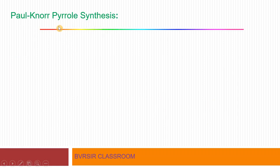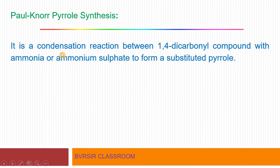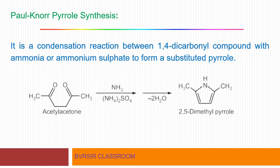Paal-Knorr synthesis is a named reaction. It is a condensation reaction between a 1,4-dicarbonyl compound with ammonia or ammonium sulfate to form substituted pyrrole. It is a very easy method for the synthesis of substituted pyrrole. For example, a 1,4-dicarbonyl molecule reacting with ammonia or ammonium sulfate gives a substituted pyrrole such as 2,5-dimethylpyrrole. This is called Paal-Knorr pyrrole synthesis.